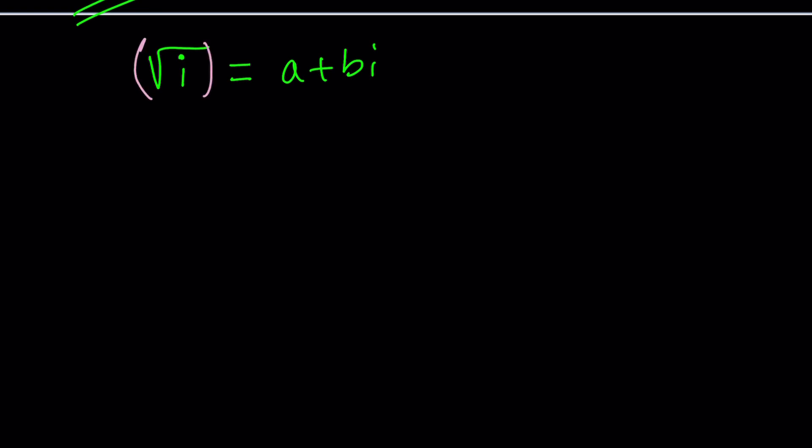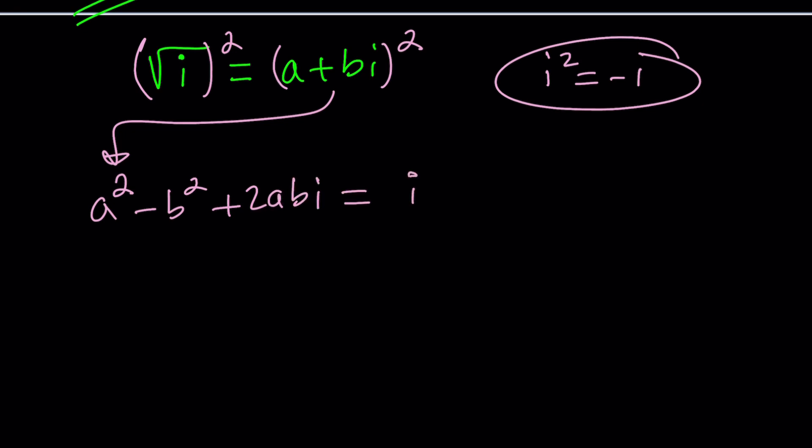That should give us a squared plus 2abi plus b squared i squared. One thing that you should never forget is i squared is negative 1. That's why i is considered the square root of negative 1. So b squared i squared is just going to be minus b squared, and now we have 2abi, and that's equal to just i. Now we have two complex numbers that are equal. What does that mean? That means the real parts are equal, and the imaginary parts are equal. But notice that there's nothing on the right hand side for the real part.